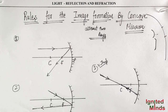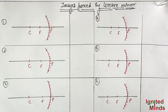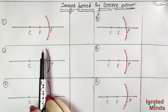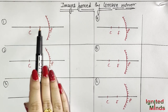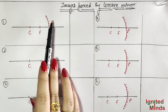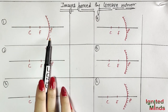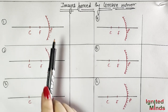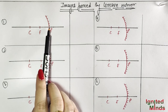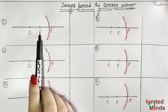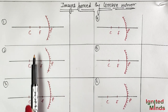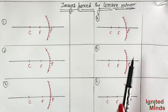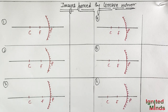Let's start. So I have made here six boxes. I have made the principal axis, this is the Concave Mirror, this is the Pole, this is the Focus, and this is the Center of Curvature. So I have made the six cases.